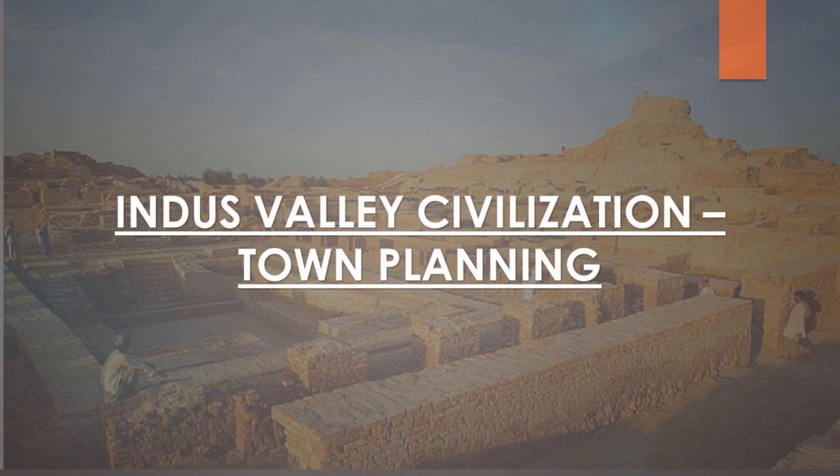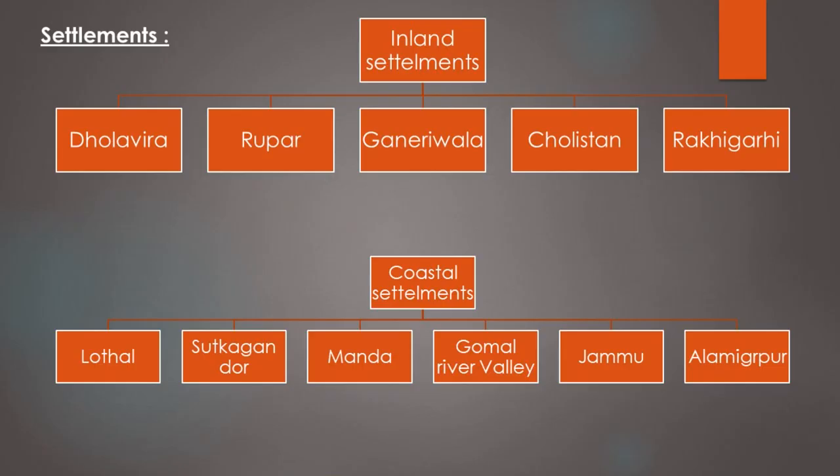Now talking about Indus Valley town planning, which is a major part of the civilization. Settlements were differentiated into two types: inland settlements and coastal settlements. Inland settlements include Dholavira, Rupar, Ganyaribhala, Cholistan, and Rakhigarhi. Coastal settlements include Lothal, Sutkagen-dor, Mainda, Gomal River Valley, Jammu, and Alamgirpur.